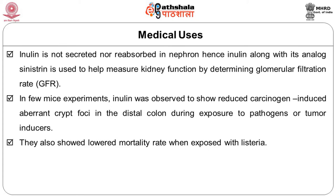Inulin, being a soluble fiber, is suitable for dietary management of diabetics and has medical uses. Inulin is not secreted nor reabsorbed in the nephron; hence inulin along with its analog sinistrin is used to help measure kidney function by determining glomerular filtration rate. When you want to know the kidney function, the glomerular filtration rate is very important, where this ingredient can be used. In a few mice experiments, inulin was observed to show reduced carcinogen-induced aberrant crypt foci in the distal colon during exposure to pathogens or tumor inducers, and also showed lowered mortality rate when exposed to Listeria.